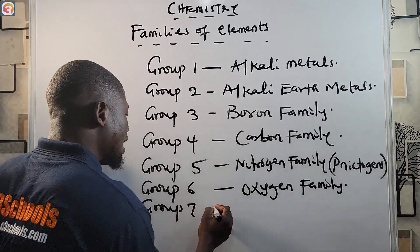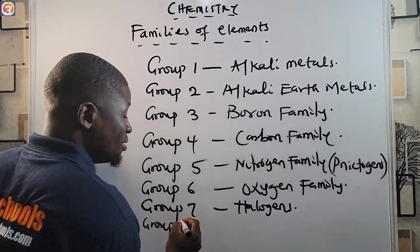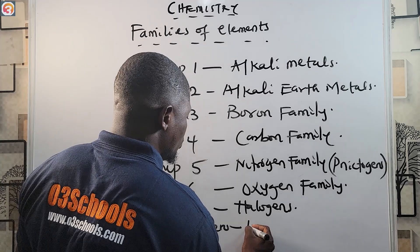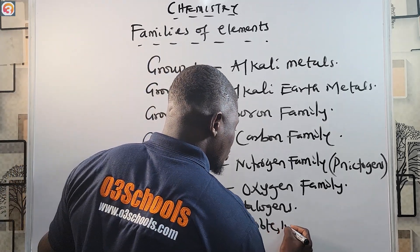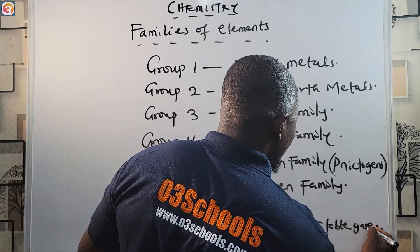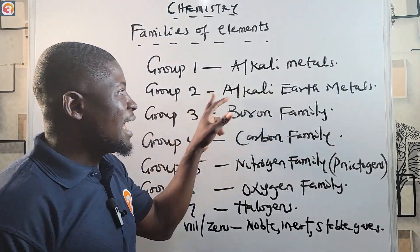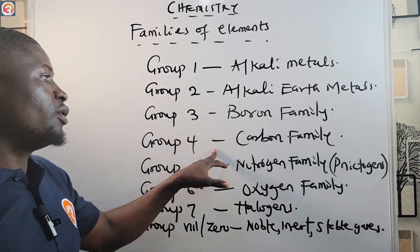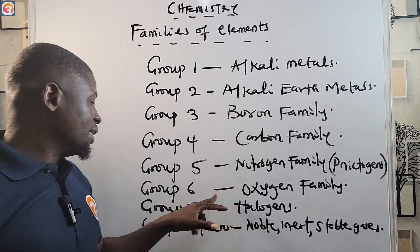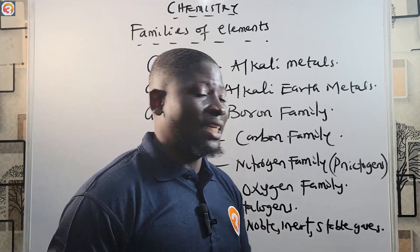Group seven elements are called the halogens. Group eight, also called group zero, are called the noble gases, also known as the inert gases or stable gases. So to summarize: group one — alkali metals, group two — alkaline earth metals, group three — boron family, group four — carbon family, group five — nitrogen family, group six — oxygen family, group seven — halogens, group eight or zero — noble gases.